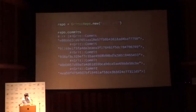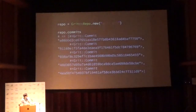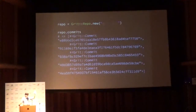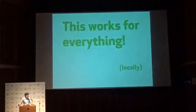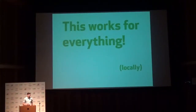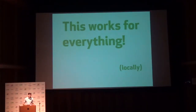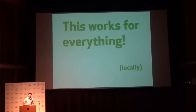It can look something like this — you create a new Grit repo pointing at something, and you can do things like show all the commits. You can look up individual files, look up files by paths, look at the history, do rev-lists, diffing, merging, all of that stuff. But it only works locally — you have to have direct access to that file system to be able to access the repositories.